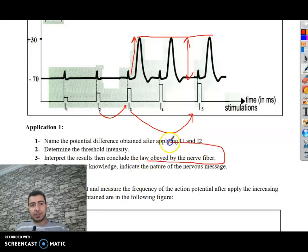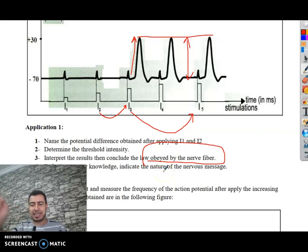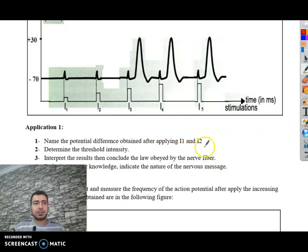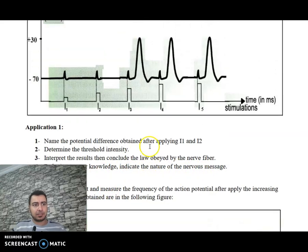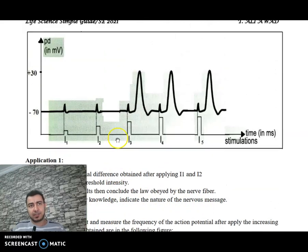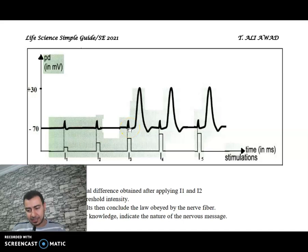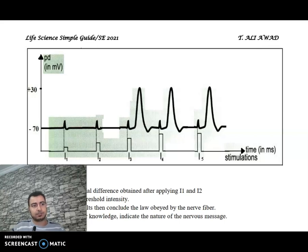We conclude that the nerve fiber obeys the law of all-or-none. Either action potentials are not obtained at all, or they are obtained and all are equal in amplitude. Finally, regarding the nature of the nervous message: it is electrochemical — it is an electrical signal resulting from chemical substances.